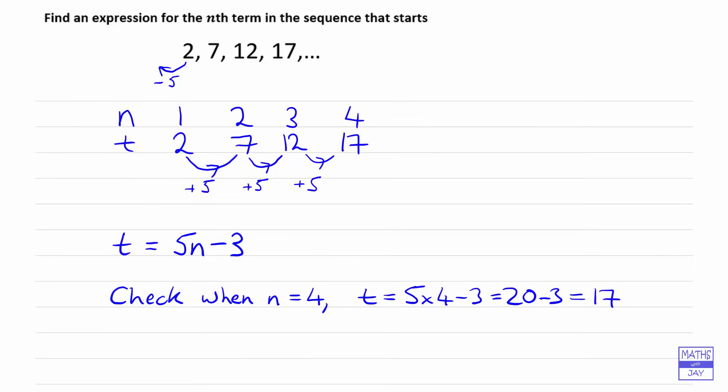And also now that we've got the formula, we could find any term in the sequence that we want. For example, the hundredth term: when n is 100, we'd have 5 times 100 minus 3, so 500 minus 3 would be 497. So the hundredth term in this sequence would be 497.